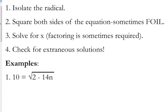Step one is to isolate the radical. In this case, the radical is already isolated. There is nothing else on the side that has the square root except for what's under it — the 2 minus 14n. All of that is under the square root, so the radical is isolated. We're good with step one.